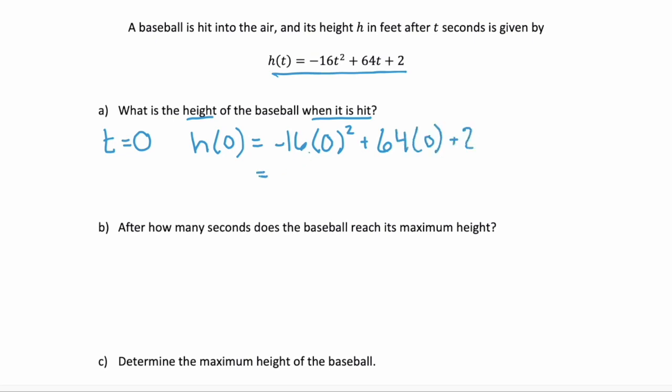Now notice this first term, we have zero squared which is zero. And anything times zero is just zero. And the second term is also times zero, so that stays a zero. And the last term is two. So zero plus zero plus two is two. Well, it wants to know the height. And how do we measure height? For this problem, height h is in feet. So our final answer is going to be two feet.